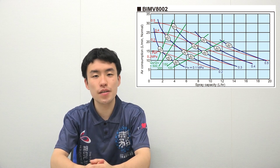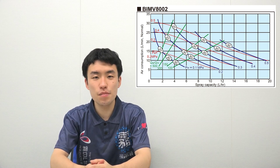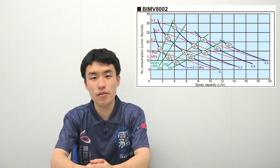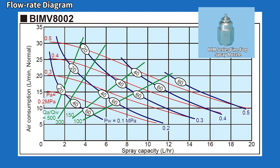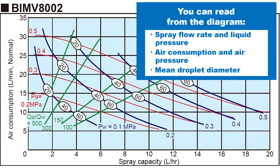To obtain this information, we use a flow rate diagram, which I will explain today. If you understand how to read flow rate diagrams, you can easily control the spraying conditions. Take for example the BIM series, which produces fine atomization. We'll first explain using a flow rate diagram for one of the BIM series models, and then show you spray demonstrations.